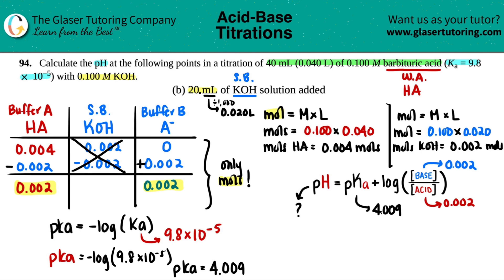Now I have everything to solve for the pH. So pH equals 4.009 plus the log of the base, which is 0.002, divided by the acid, which is 0.002. And now you can plug this all into the calculator. Just know that if you have a log of the same number on the top and the bottom, they cancel, because the log of 1 equals 0.